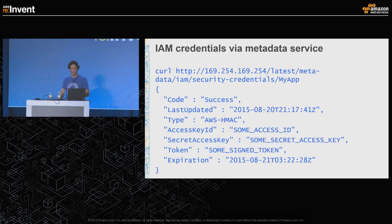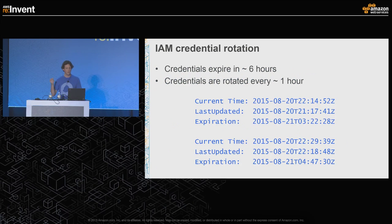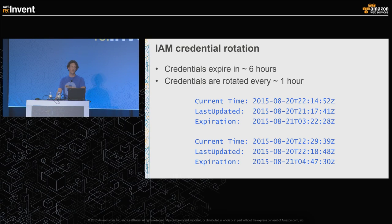Looking at the response when you request credentials, you get an access key ID, secret access key, and a signed token. Comparing the expiration time with the last updated date, we found that credentials are rotated every hour but are good for six hours. We thought: could we do this better ourselves? The answer was no, because the hardest part is bootstrapping those credentials to that machine, and Amazon has a distinct advantage operating below your EC2 instance at the hypervisor layer where they have access to hardware.